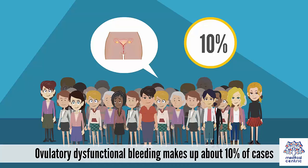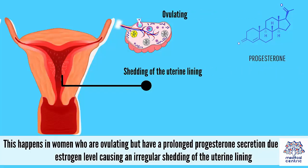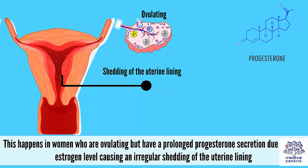Ovulatory dysfunctional bleeding makes up about 10% of cases. This happens in women who are ovulating but have a prolonged progesterone secretion due to a low estrogen level, causing an irregular shedding of the uterine lining.